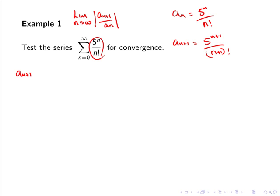So a_{n+1} divided by a_n equals 5 to the n+1 all divided by n+1 factorial, all divided by a_n which is 5^n all over n factorial.